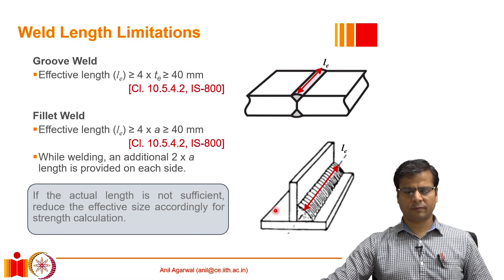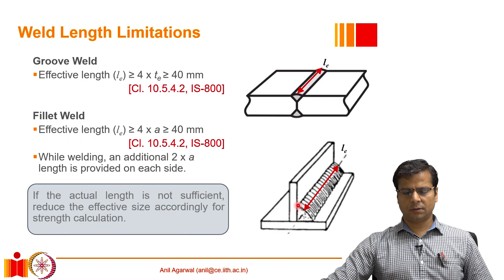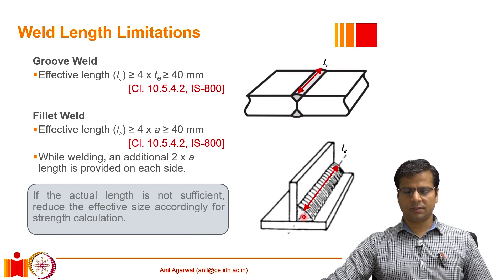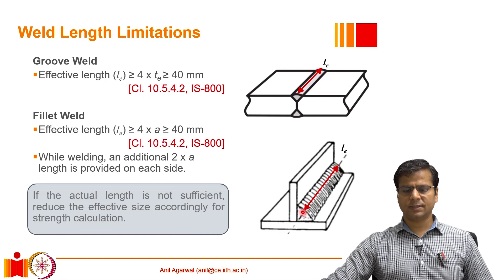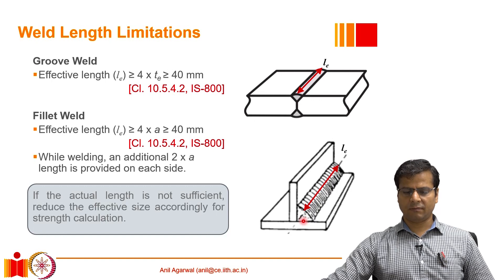At least 4 times the weld size should be the length of the fillet. However, there may be a situation where the weld length provided is less than 4 times the weld size. If that is the case, for design calculations we should consider the provided length as the effective length and reduce the size of the weld so that the weld size equals one fourth of the weld length.